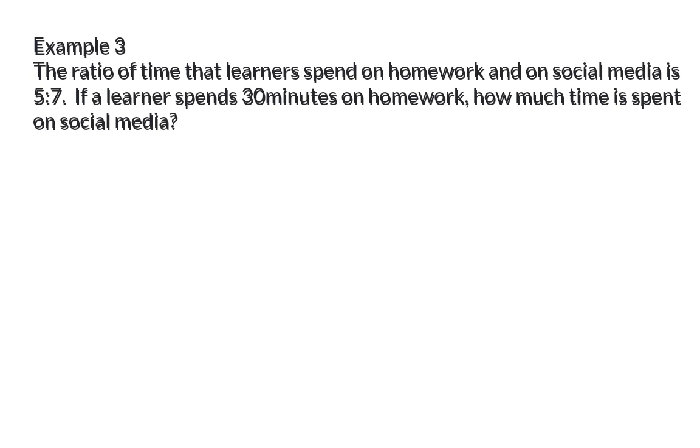For example 3, the ratio of time that learners spend on homework and on social media is 5 to 7. If a learner spends 30 minutes on homework, how much time is spent on social media? When a ratio is given, the first part that is mentioned is also the first part in the ratio, in our case, homework. And the second part mentioned, social media in our case, will then be the second part of the ratio, and that is 7. This ratio, of course, describes the relationship between the two, and doesn't necessarily give us the actual values. The actual time spent on homework is given as 30 minutes.